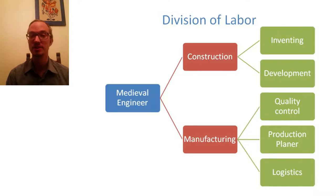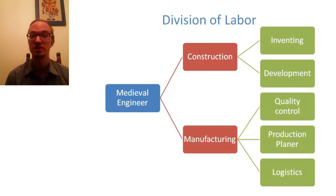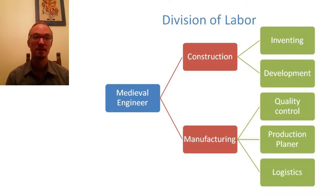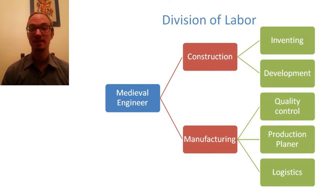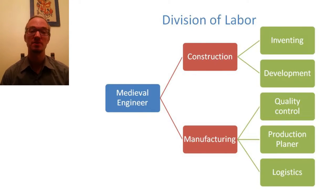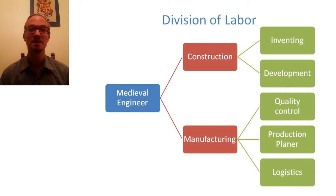What the medieval engineer did all on his own is now performed by many different professions: the inventor, the constructor, the technical drawer, the production planner, the logistician, quality control, designer, and so on. This division of labor makes the engineer very dependent on others, but it also breaks the work down into small, digestible parts — making it possible for others to step in and take part in the production process.